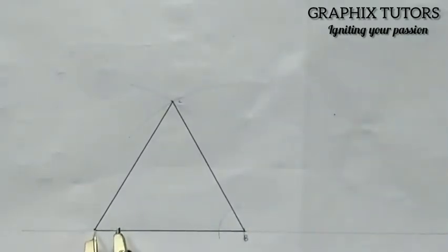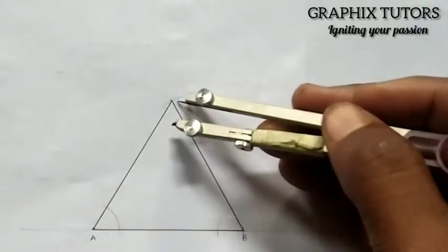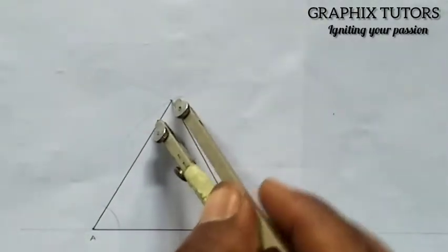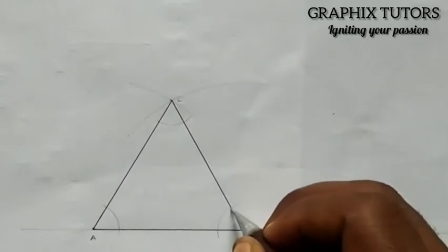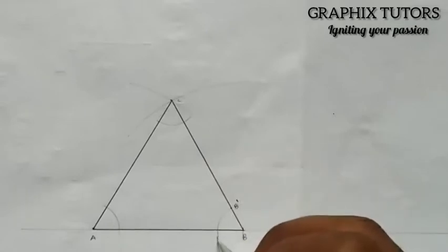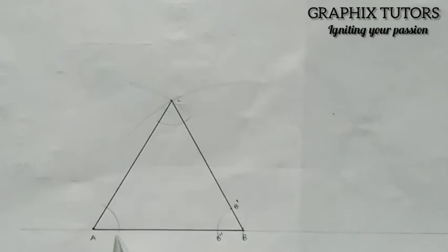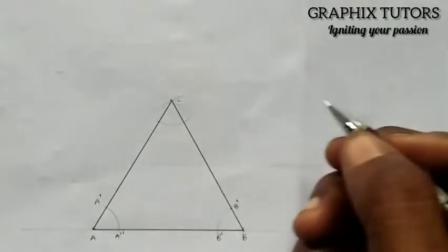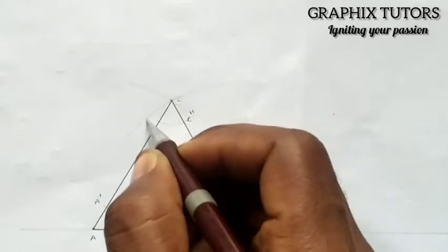With the same radius, I'll come to A and check another arc, and with the same radius, I'll come to C also. Using the same radius throughout: at point B, I'll label the arc intersection points B prime and B prime prime. At A, I'll label them A prime prime and A prime. At C, I'll label them C prime prime and C prime.